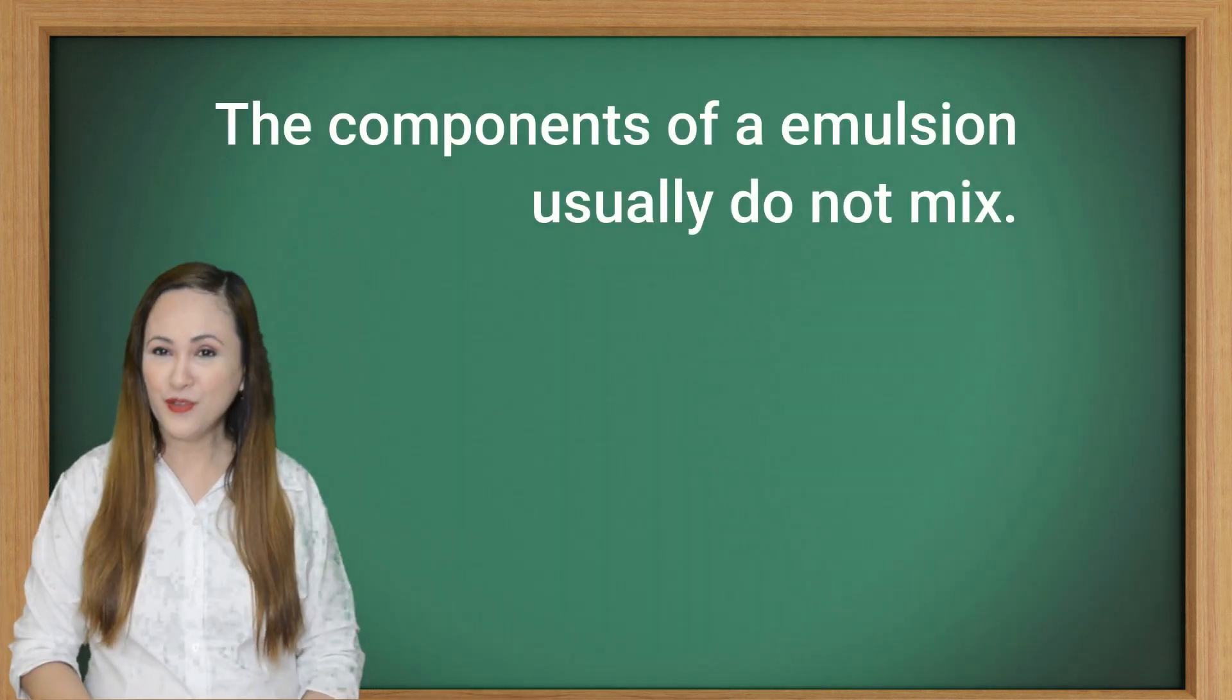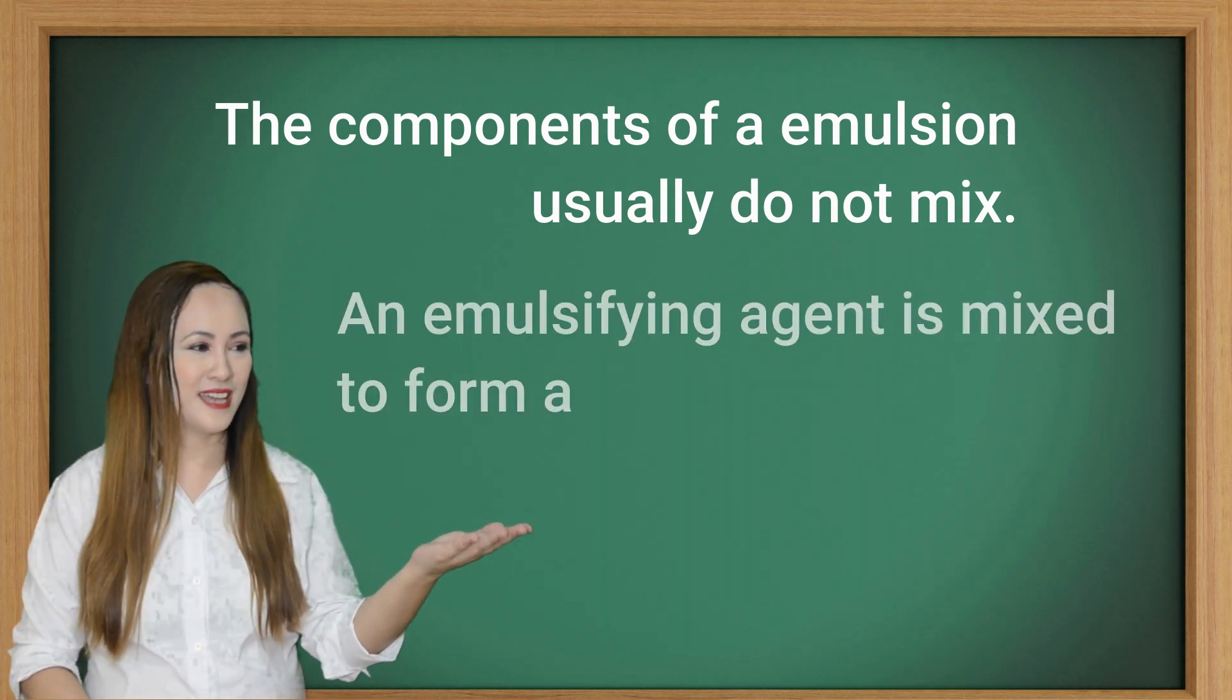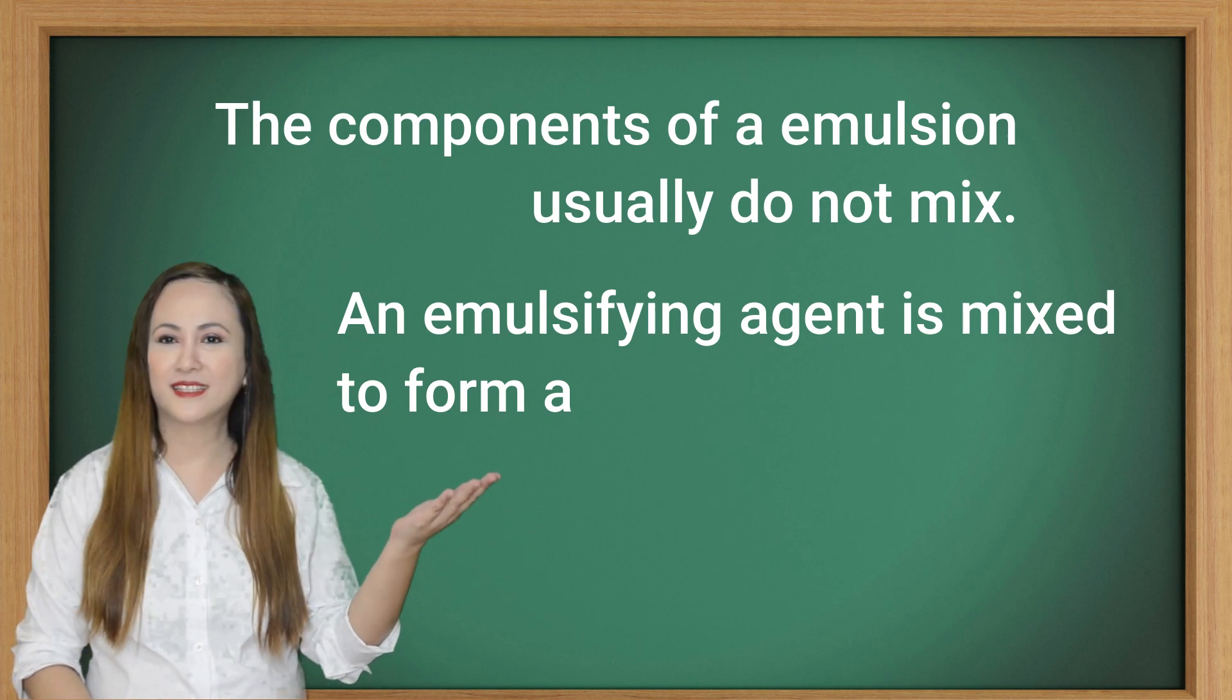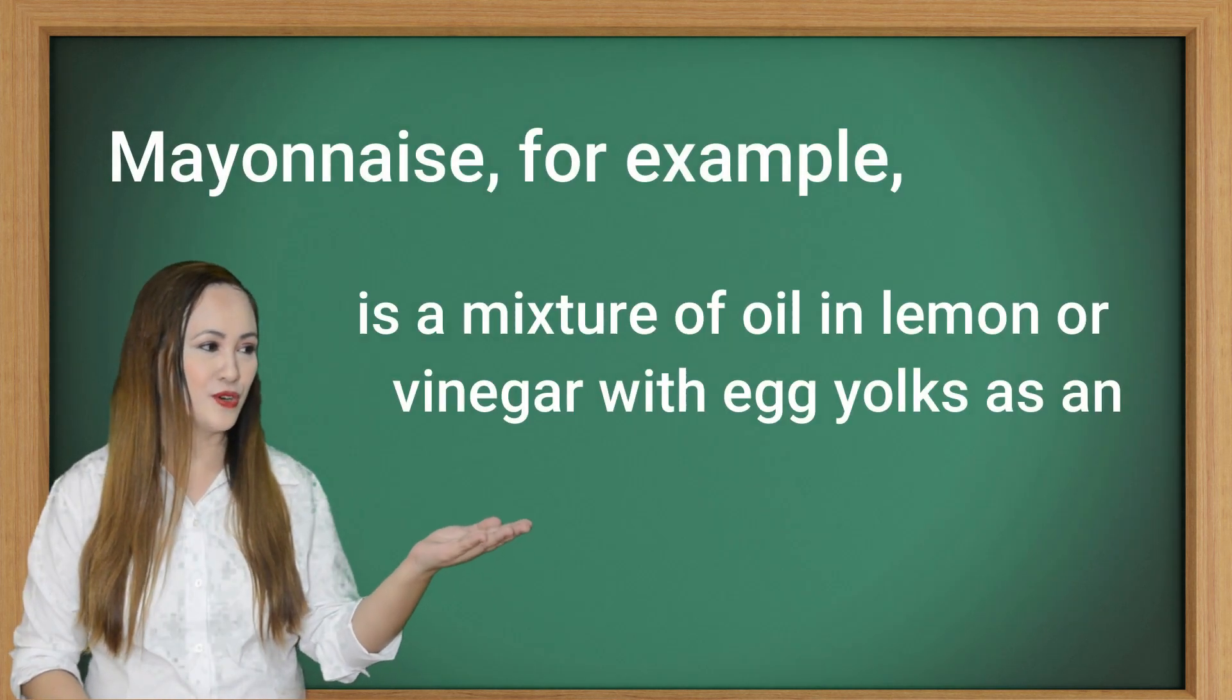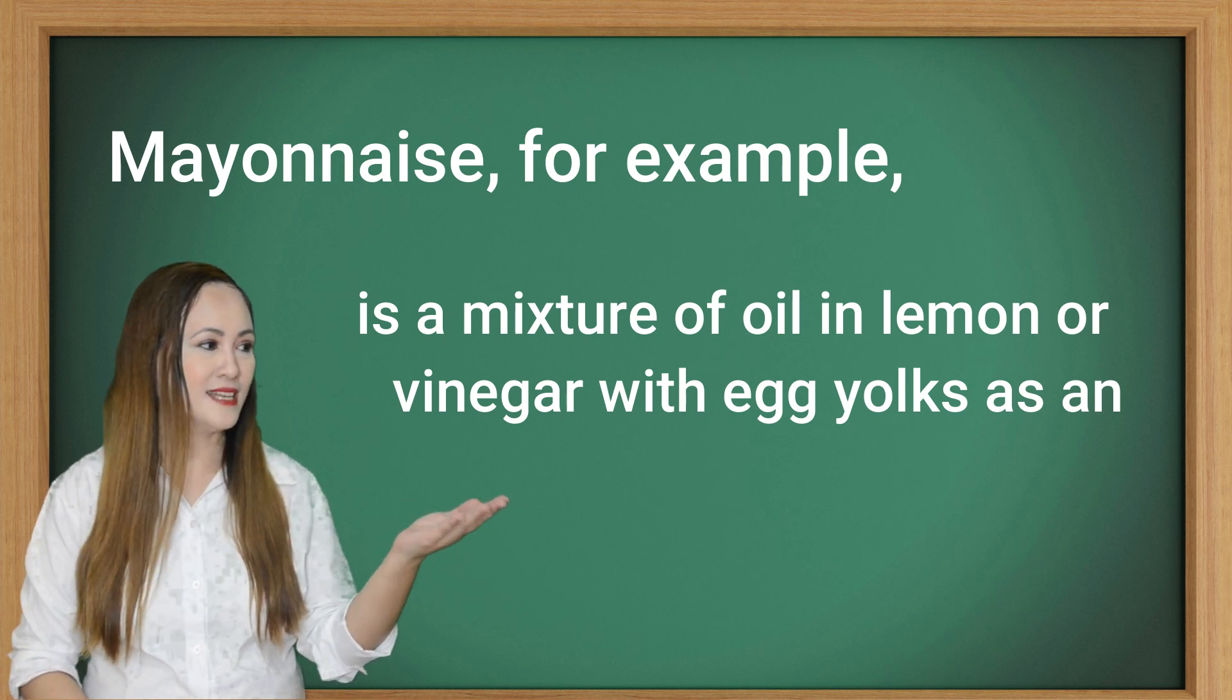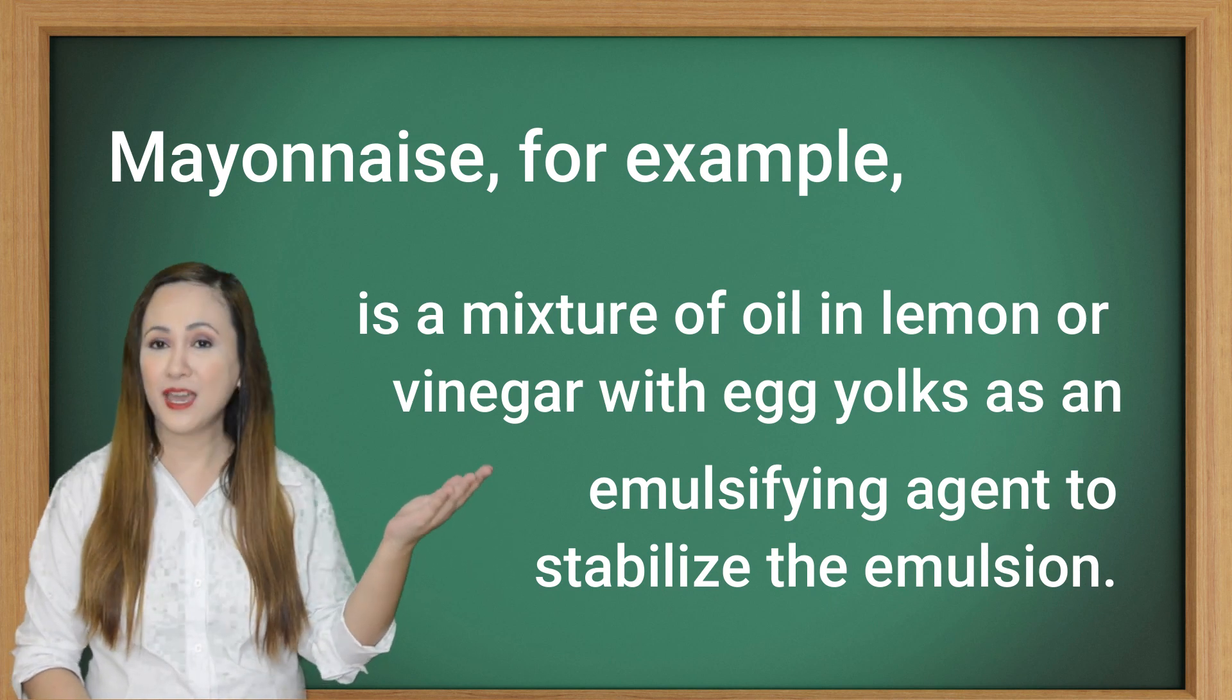The components of emulsion usually do not mix. An emulsifying agent is mixed to form a stable emulsion. Mayonnaise, for example, is a mixture of oil in lemon or vinegar with egg yolks as an emulsifying agent to stabilize the emulsion.